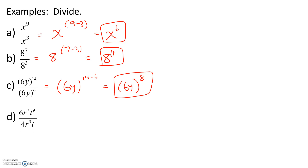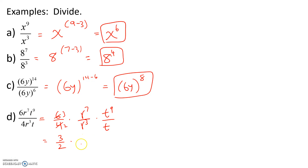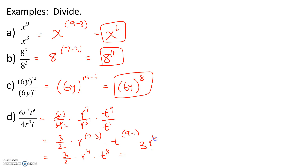In the next example, we have coefficients 6 and 4, which are not exponents. So, we will separate the different bases and write this as 6 over 4, times r to the 7th over r cubed, times t to the 9th over t. 6 over 4 reduces to 3 over 2. r to the 7th divided by r to the 3rd — we keep the base and subtract the exponents, giving r to the 4th. t to the 9th divided by t — t has an exponent of 1, so we keep the base and subtract, giving t to the 8th. Since we're dividing, this gives us 3 over 2 times r to the 4th times t to the 8th, which we can write as 3 r to the 4th t to the 8th over 2.